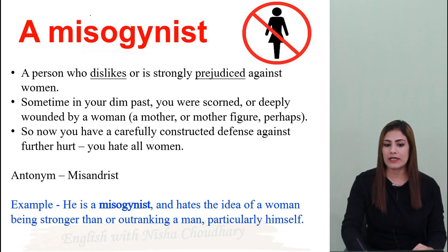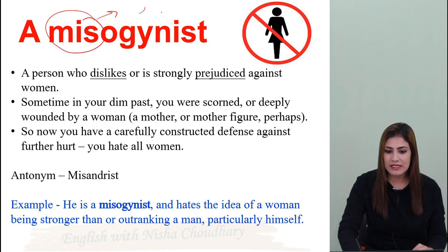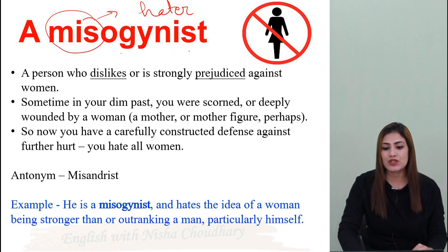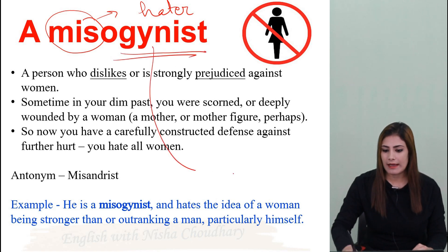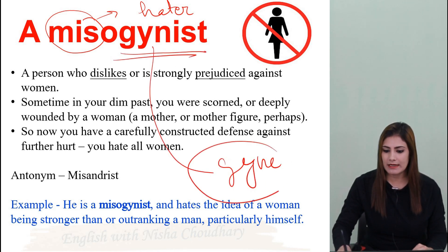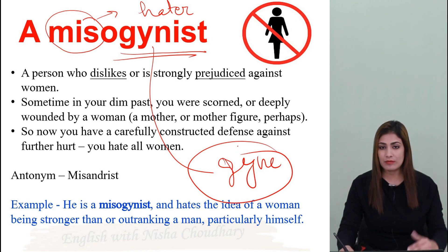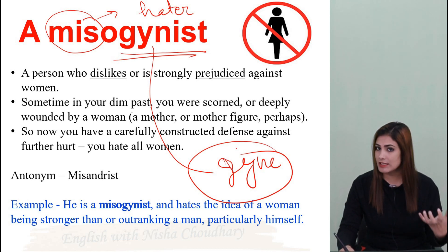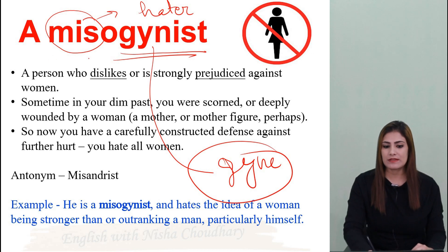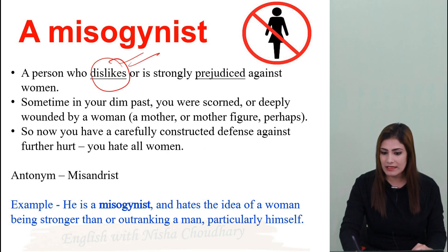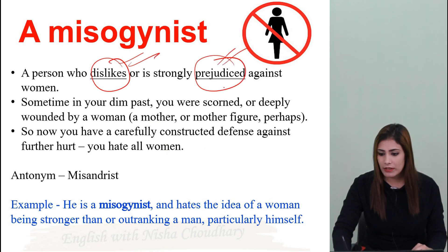Next word is misogynist. Here again mis- appears, meaning 'hater'. And what kind of hater? The word is formed from the root gynae — we will discuss roots in detail in the next session. For now, a bird's eye view: a misogynist is a person who dislikes or is strongly prejudiced against women.